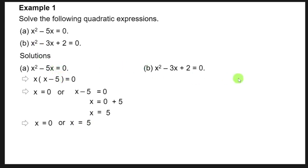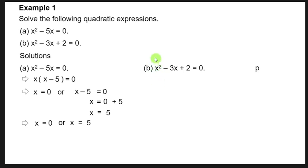Now let's look at example B: x² - 3x + 2 = 0. This type of quadratic equation involves first finding the product, then the sum, then the factors. We start with the product by multiplying the coefficient of x², which is 1, with the constant 2. So 1 × 2 = 2 is the product. The sum is the coefficient of x, which is -3.